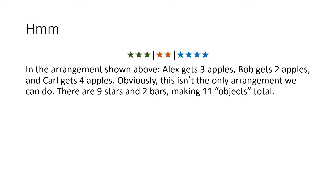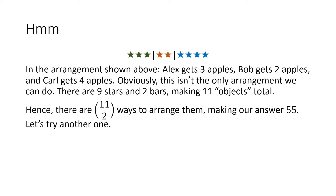So now let's go back to the problem. In the arrangement shown above, Alex gets three apples, Bob gets two, and Carl gets four. Obviously that isn't the only arrangement we can do. There are nine stars and two bars yielding 11 objects total, so there are 11 choose 2 ways to arrange the bars, so our answer is 55.